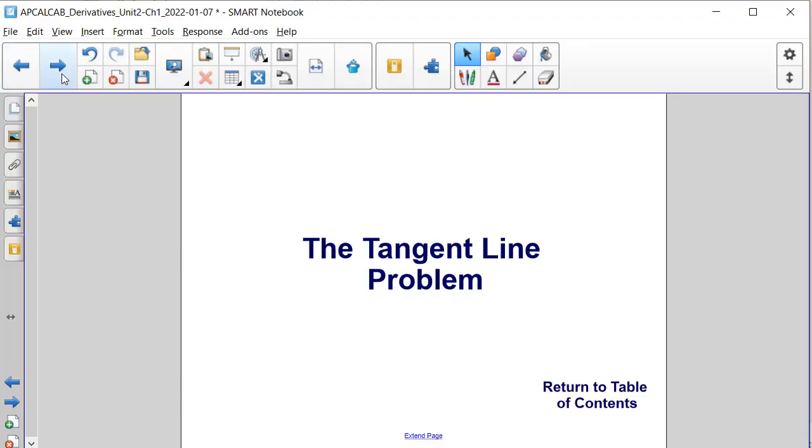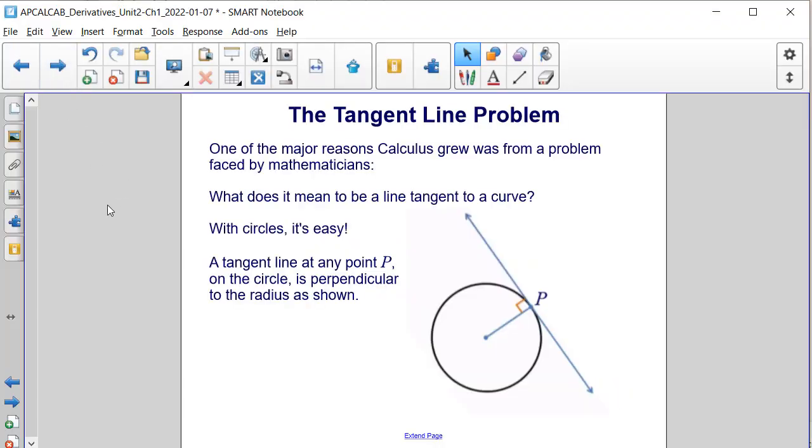The tangent line problem. One of the major reasons calculus grew was from a problem faced by mathematicians. What does it mean to be a line tangent to a curve? With circles it's easy. A tangent line at any point P on the circle is perpendicular to the radius as shown.